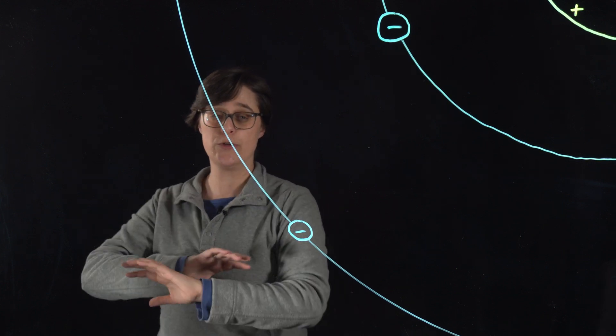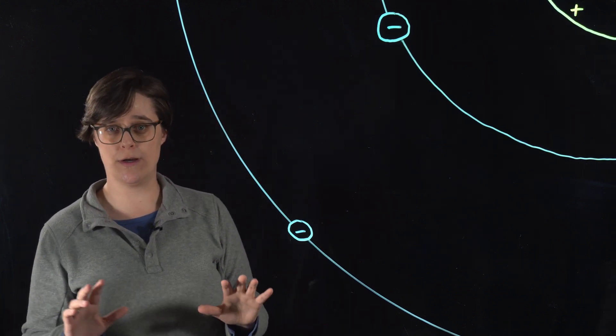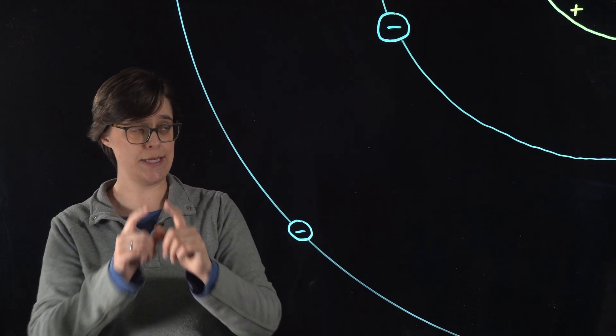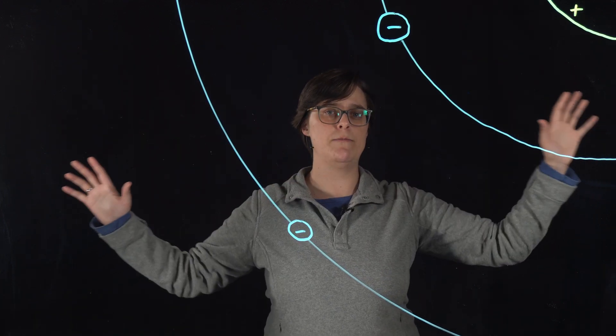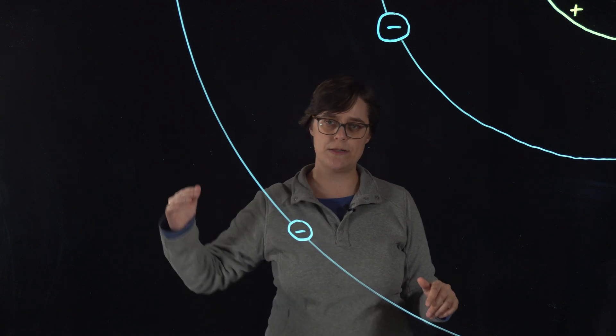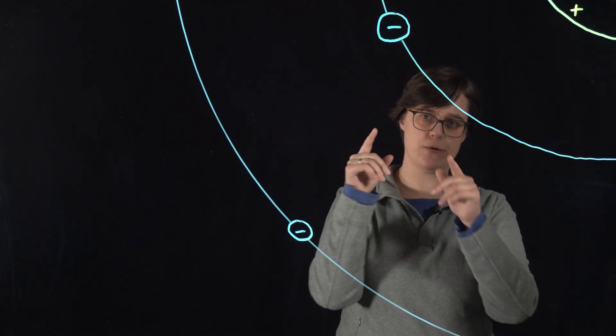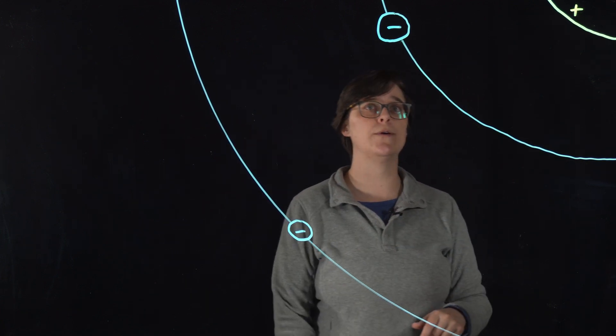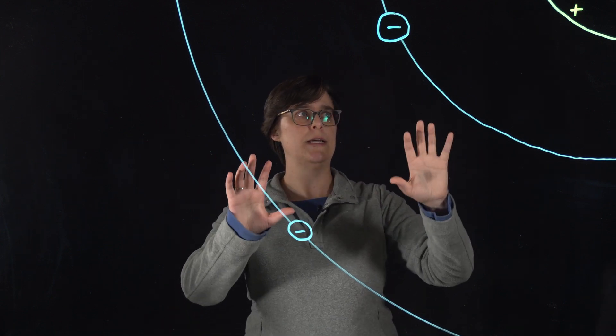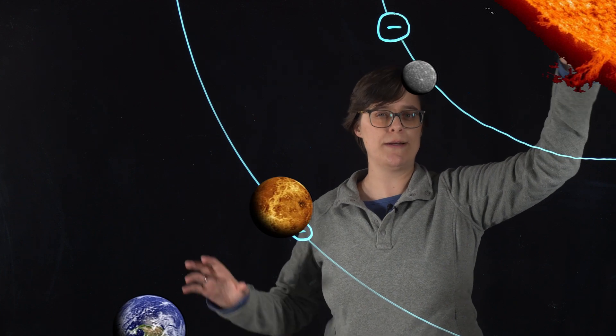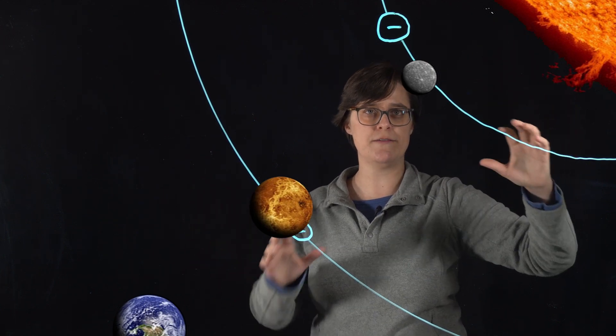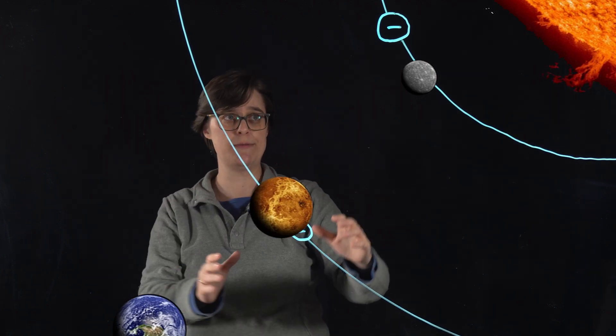You might look at this and think it looks a lot like Hantaro Nagaoka's Saturn-like atom, and I see where you're going with that thought. But the difference here is that there is a lot more empty space, because most of those alpha particles were going straight through that gold foil. Think of this more like mapping with the solar system, with the sun in the middle with lots and lots of mass, then lots and lots of empty space before you get to electrons in orbit.